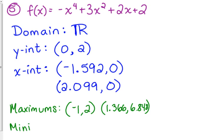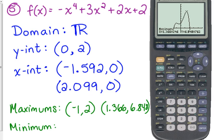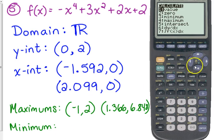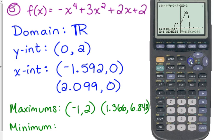Okay. Now, I'm going to find that minimum that's in between these two. So, second trace minimum this time, number 3. Got to move my cursor way back over here. Left bound, right bound. The minimum is at negative. Make sure that you get those negatives. That's (-0.366, 1.652).